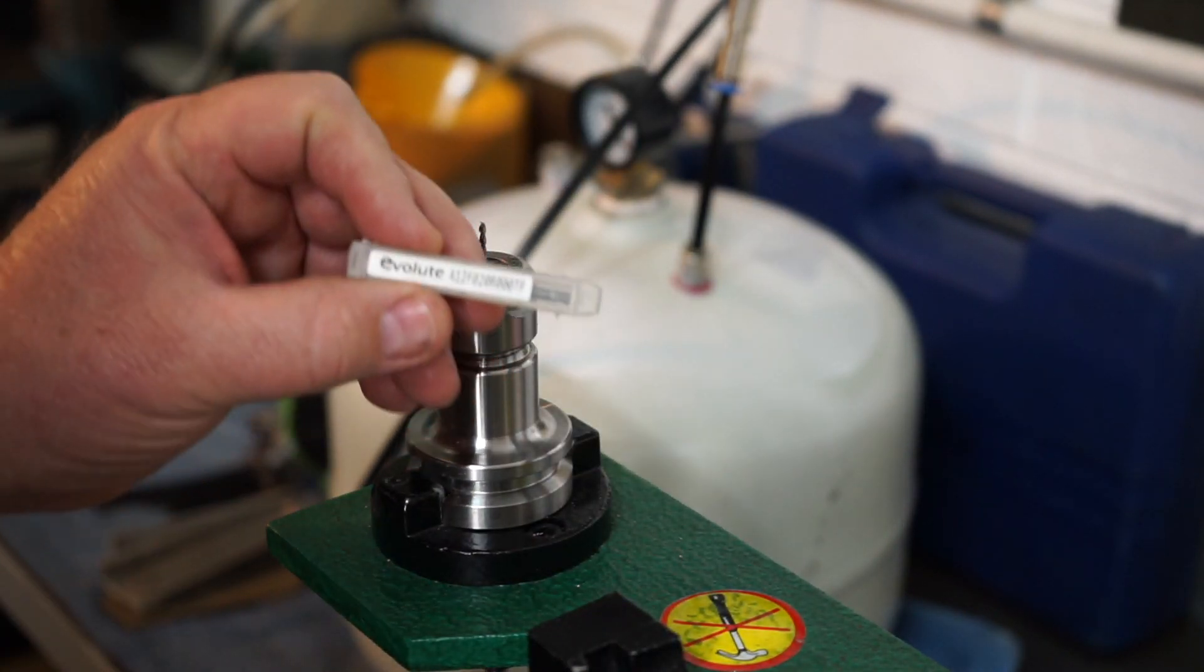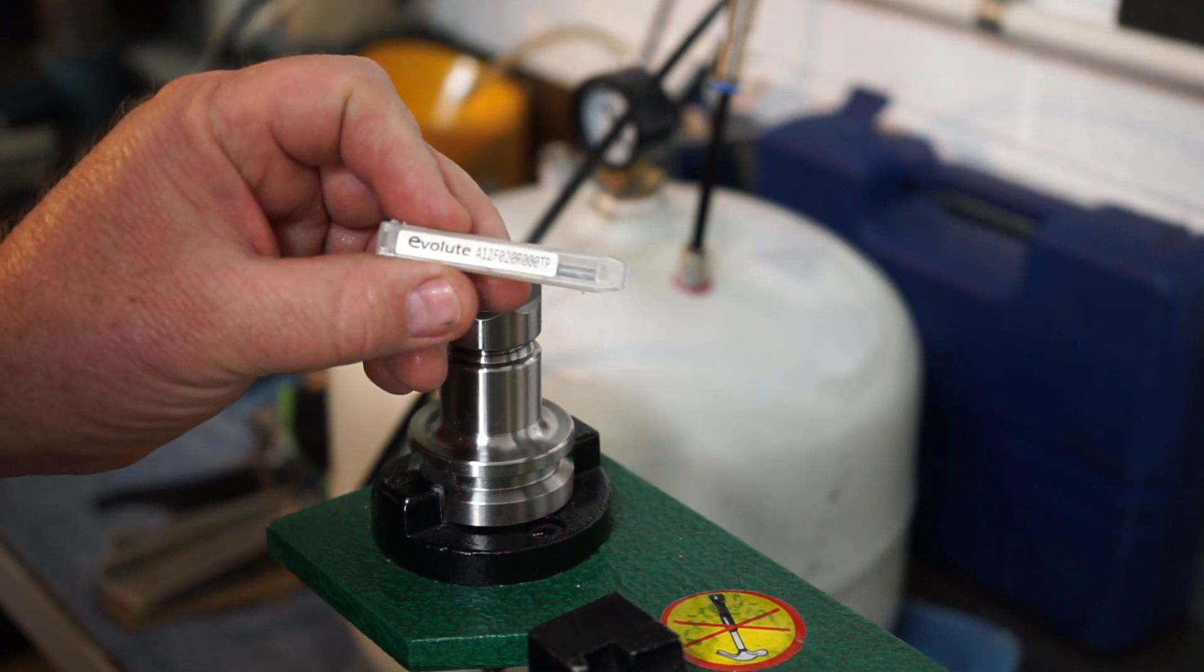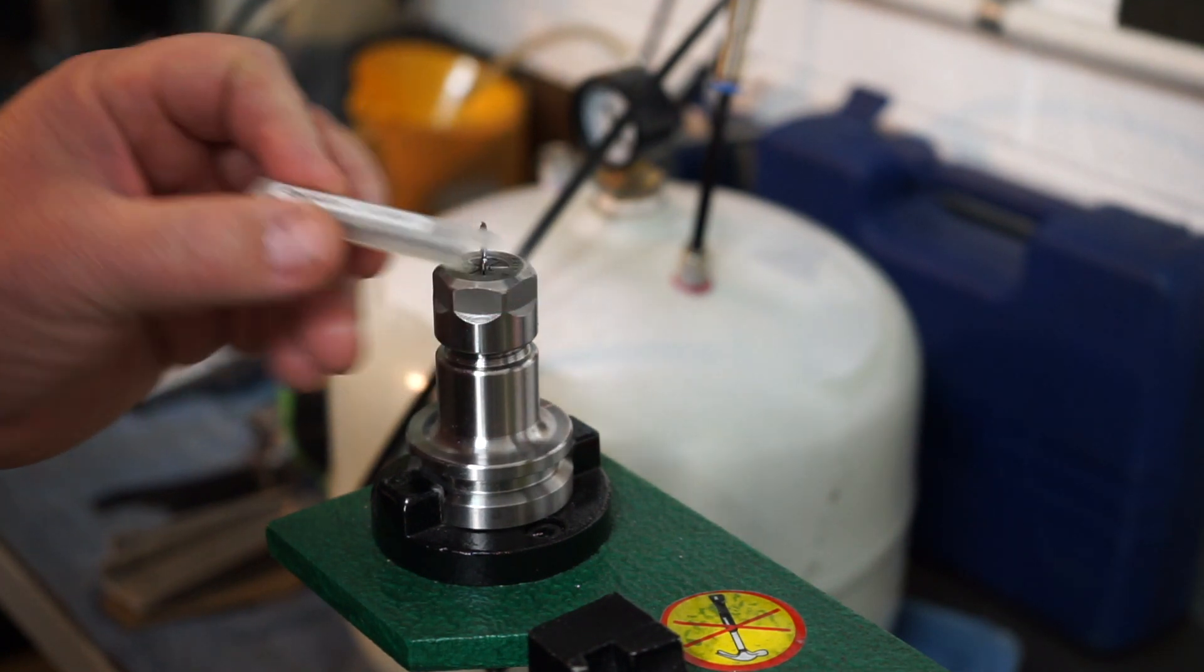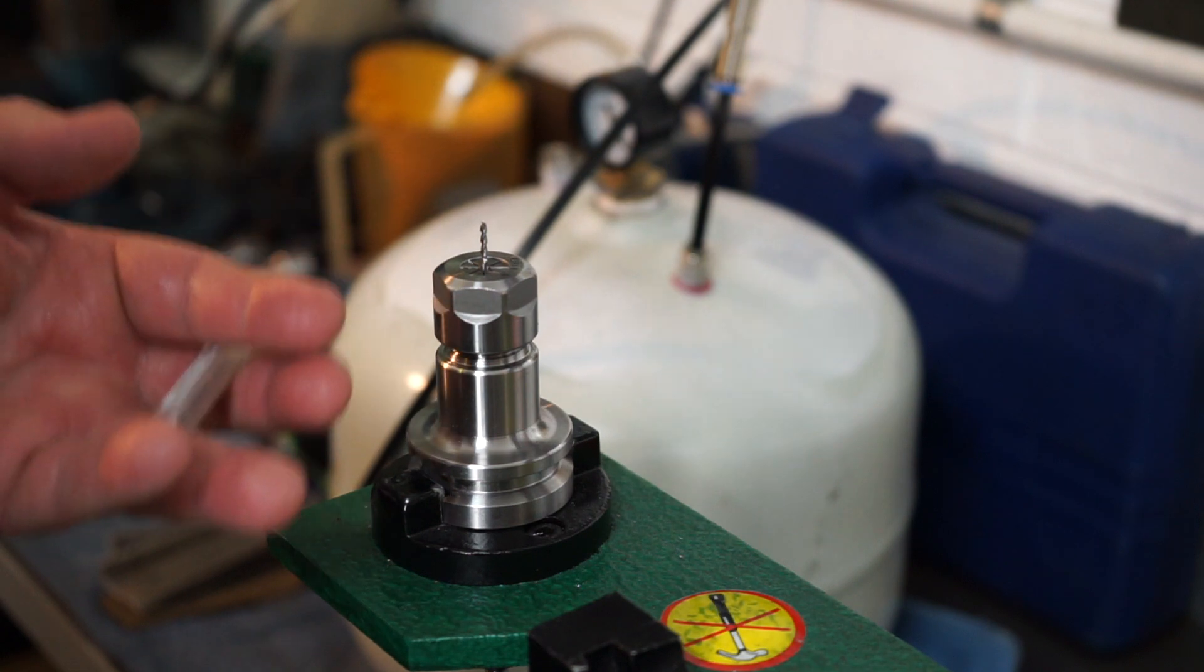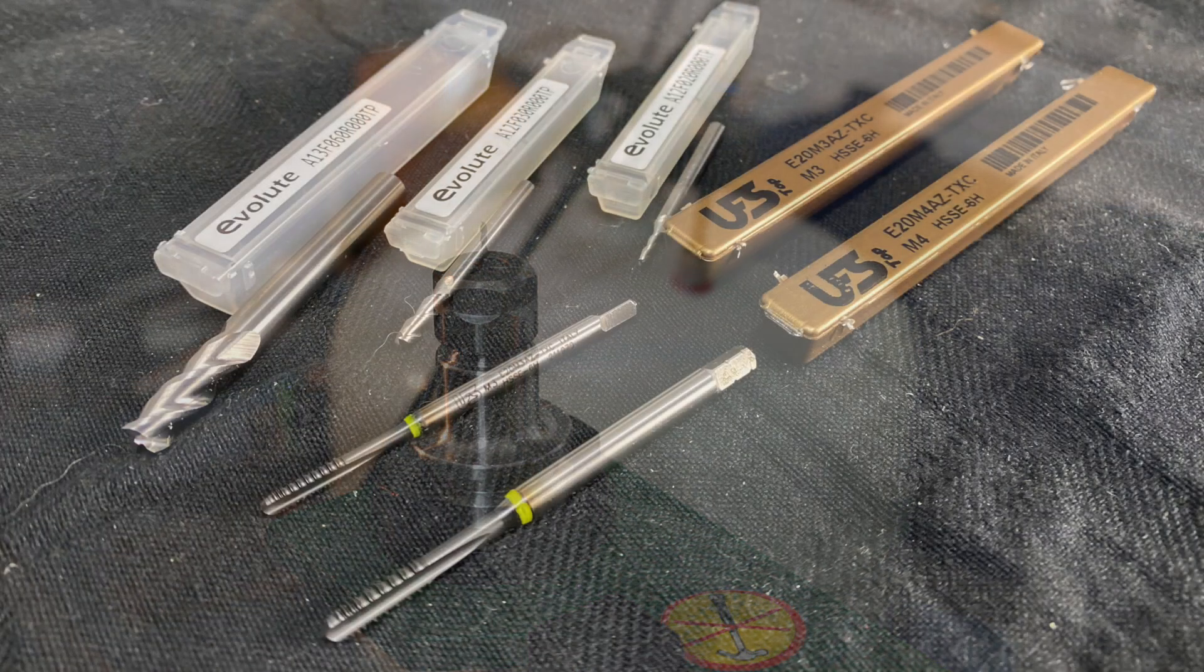Now the tools I'm using or the end mills I'm using are from Evolute. They're Australian made and supplied by Life Tools. Now to change all the tools in this roughly is going to cost me about $150. So that's for three end mills and two taps.